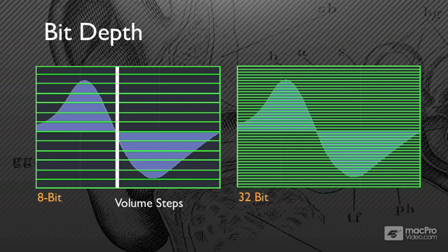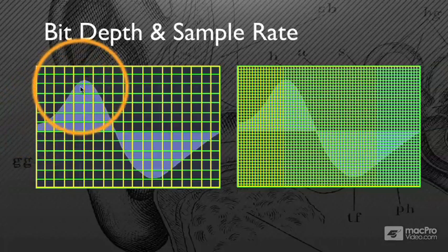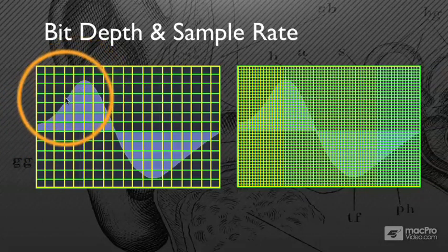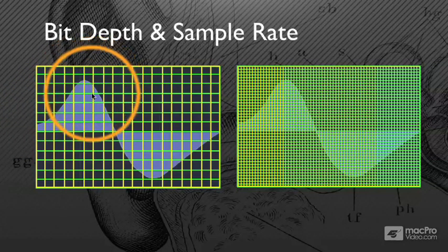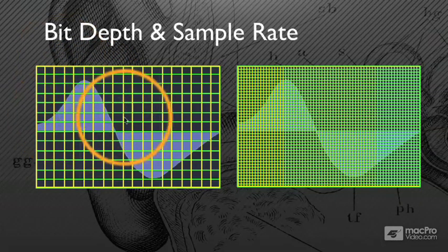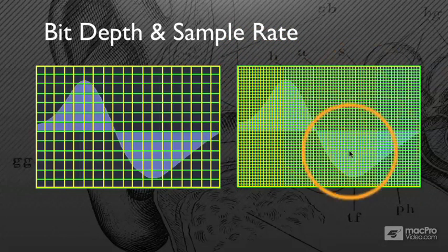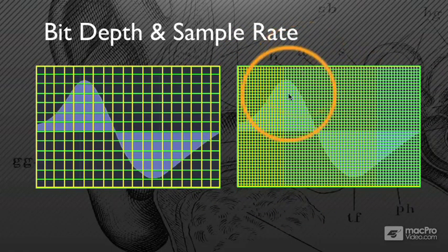When we put bit depth and sample rate together, we have what's unscientifically referred to by me as the recording matrix. My recording is going to be chunked into these coordinates, and if it falls outside of those coordinates, too bad - it's going to get pushed and chunked into it and forced into that grid. This being a much finer grid with higher resolution samples in yellow, higher resolution volume steps in green - this is a much more refined chunking of the recording process.